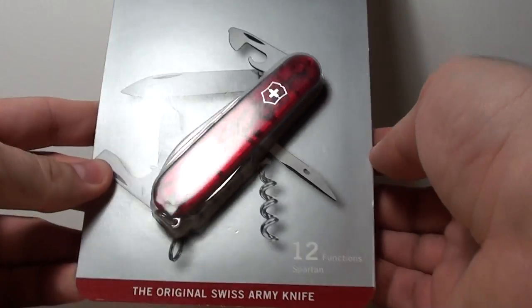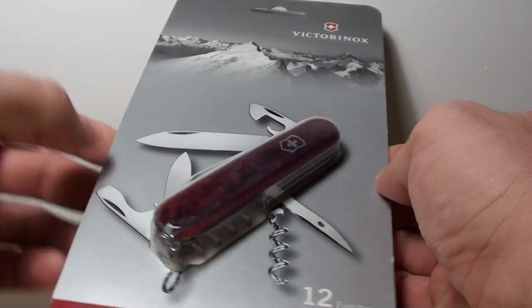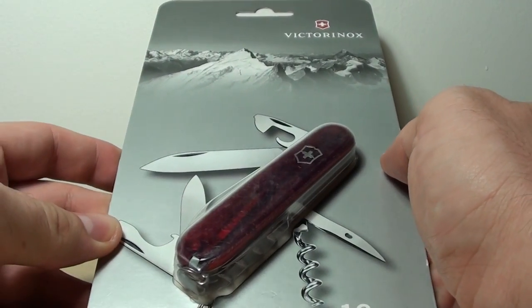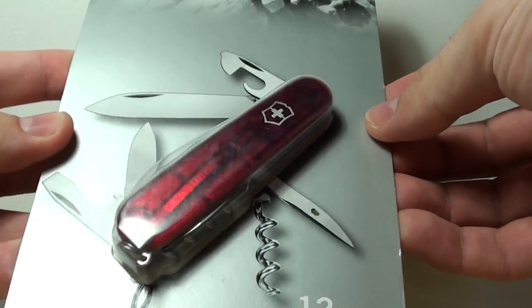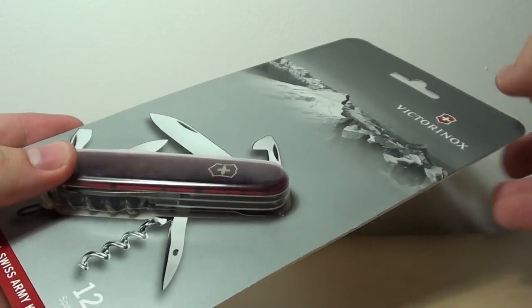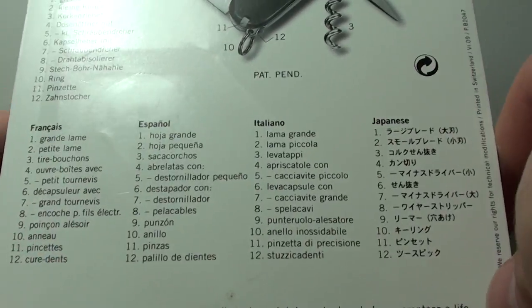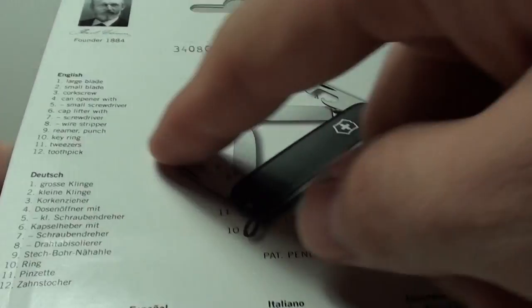We're going to look at the Spartan, which you can see here. There are two versions or two ways these knives actually come shipped. One is this kind of original, very big packaging, which you can see here, with all the functions described. Let me just show you all of them again.